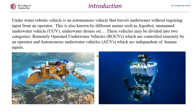What do you mean by underwater robotic vehicles? These are the autonomous vehicles which travel under the surface of water with or without any interference of humans. These vehicles are also called by different names such as aquabot — that is, aqua means water plus robot, which gives aquabot. Next, unmanned underwater vehicles, where there is no human presence in the vehicle, and they are also called as underwater drones.